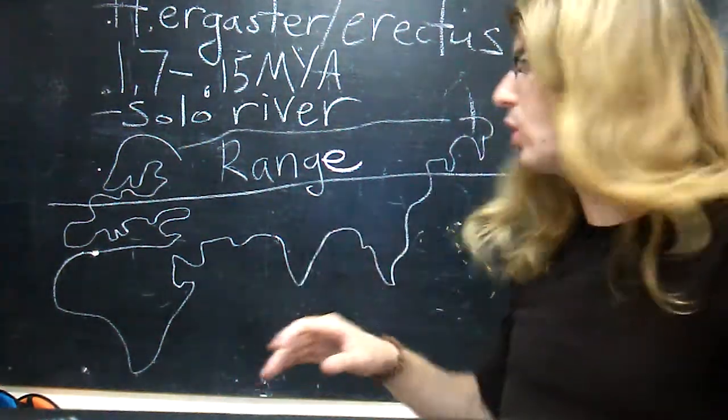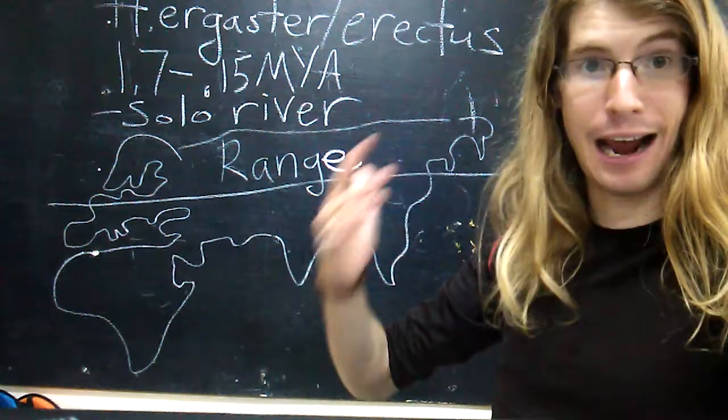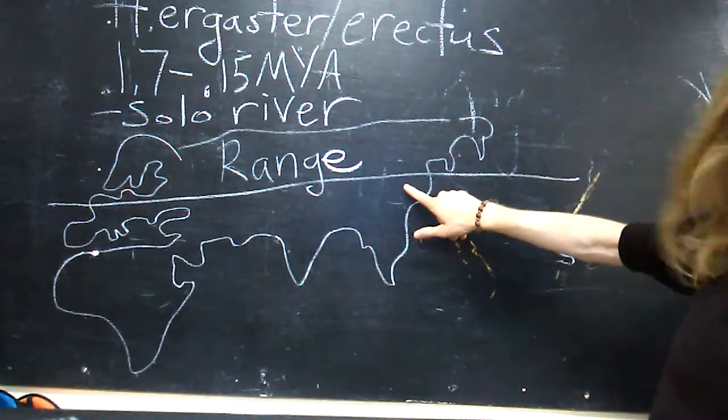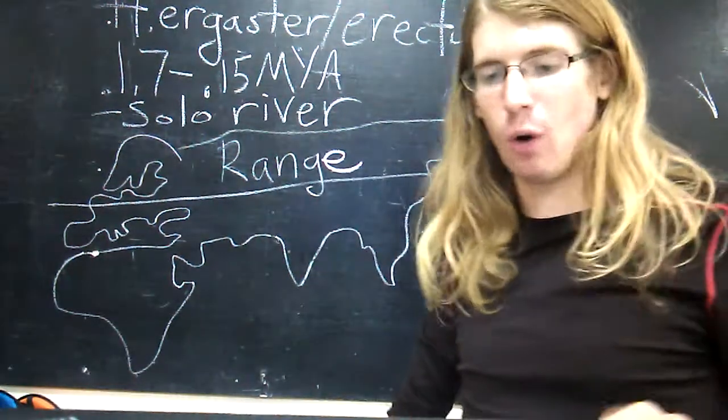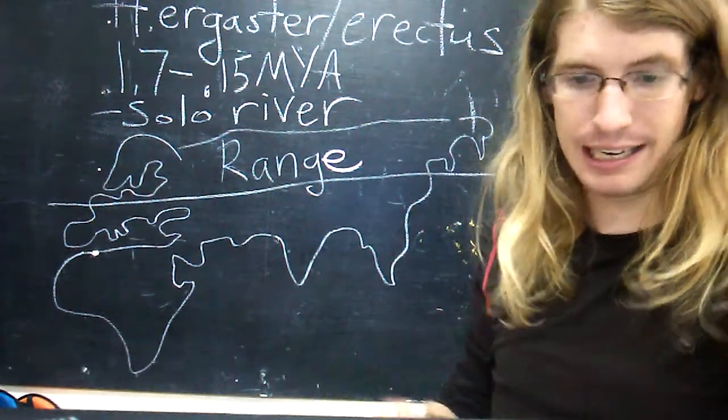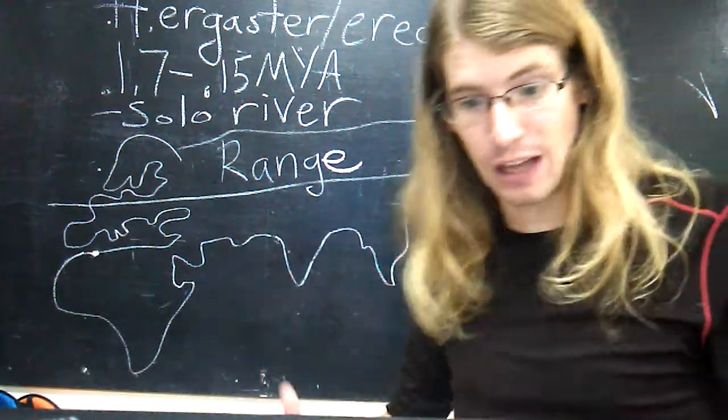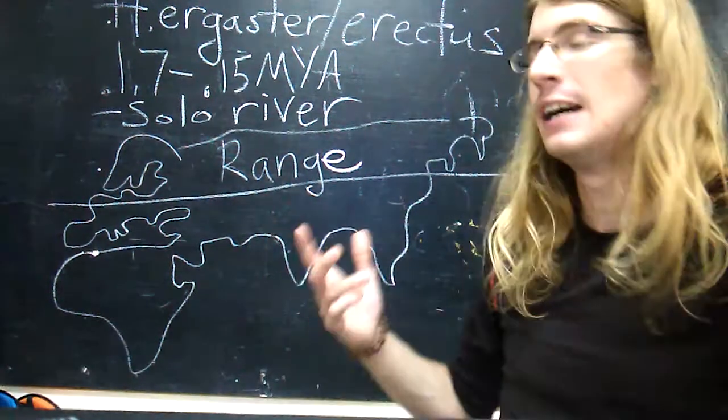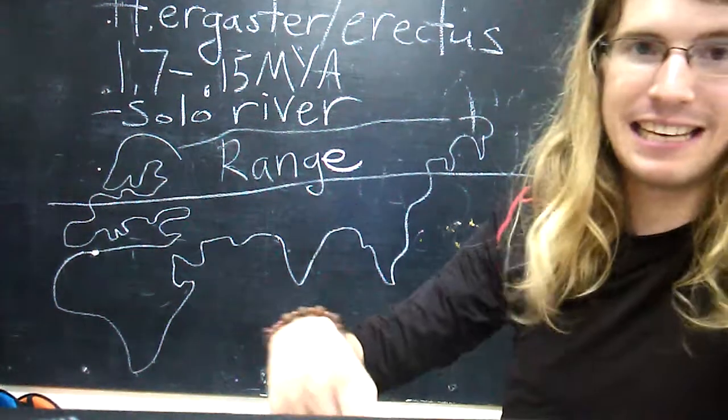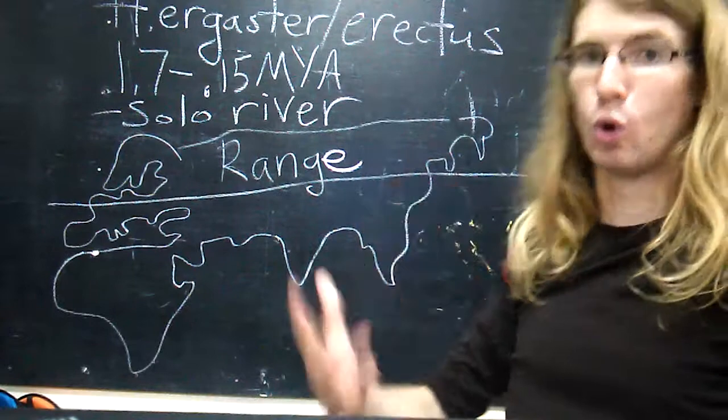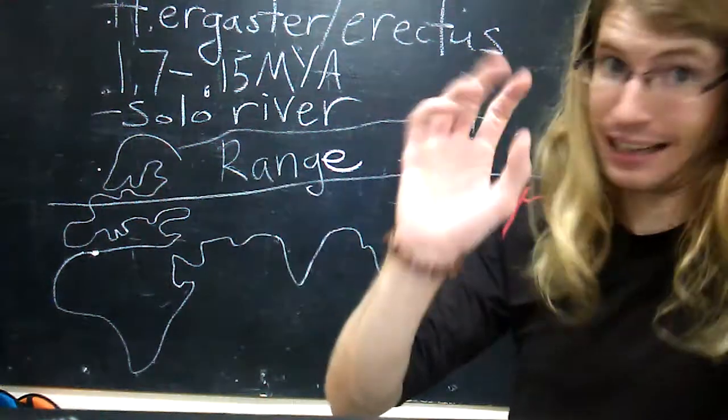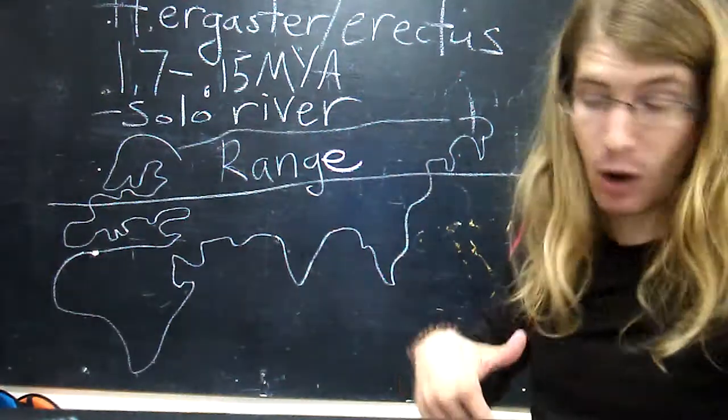Ergaster and erectus not only made it out of Africa but they spanned the whole of tropical and subtropical Africa and Eurasia, even as far northwest as France and northeast as Beijing. However, they never made it to the western hemisphere. That suggests to me that they hadn't quite developed the use of technology needed to survive in a cold climate, since you need to go up through the Arctic to get to North America.